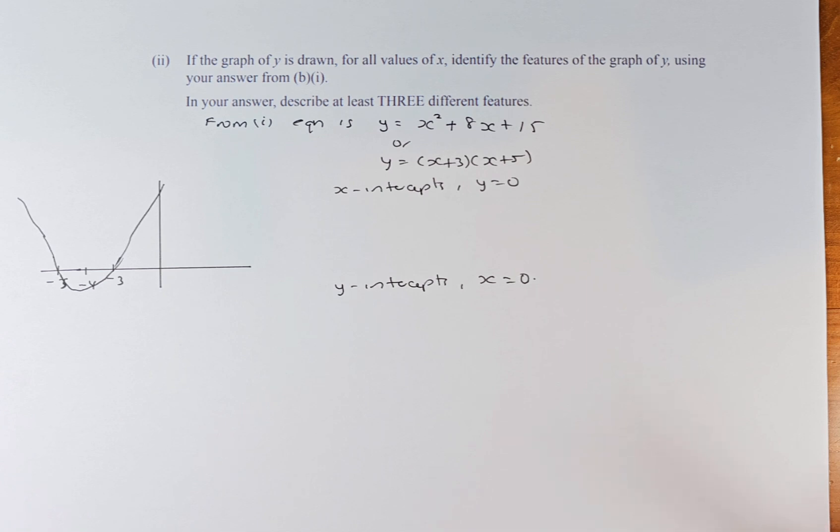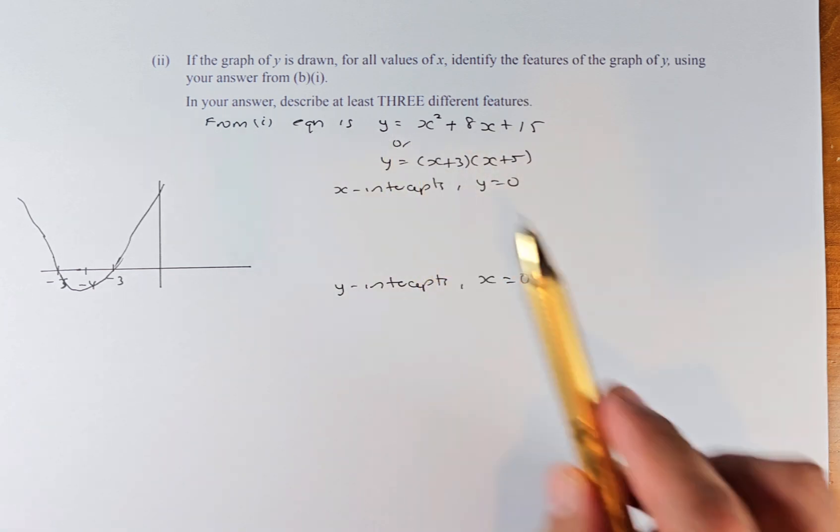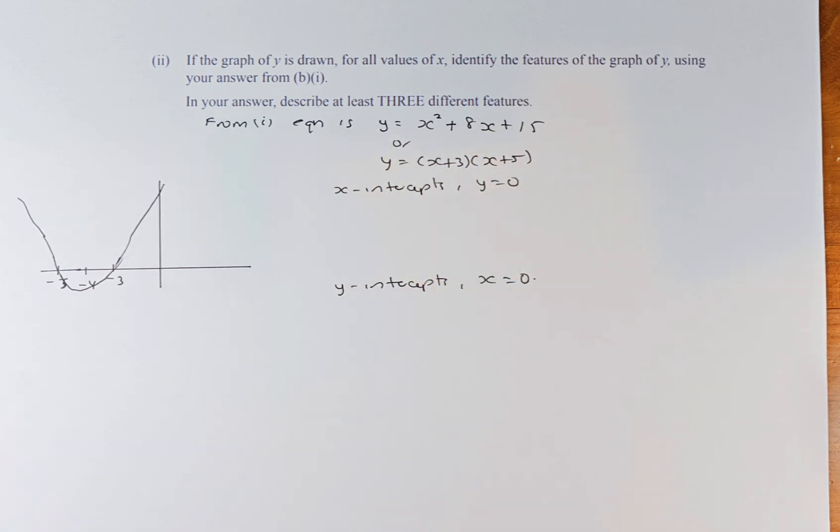If you remember from part 1, look at the last video. The equation is Y equals X squared plus 8X plus 15 or when you factorize, it's going to be Y equals X plus 3 times X plus 5. So when we talk about features, we talk about the minimum point or maximum point, the X intercept and the Y intercept.